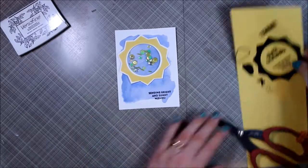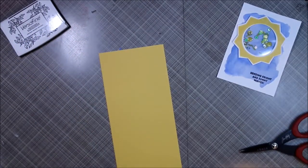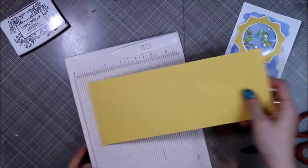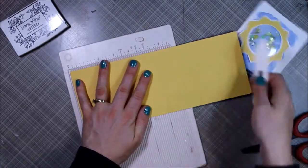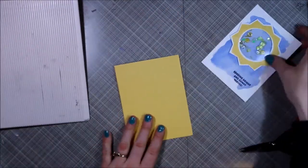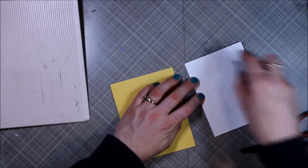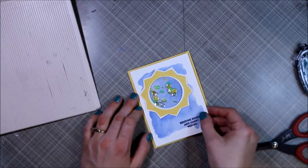I have this fun yellow cardstock. This is also Simon Says Stamp cardstock. I cut it in half the long way and scored it at five and a half, so it makes an A2 size card. Then I'm adding some snail adhesive and putting it on the front.